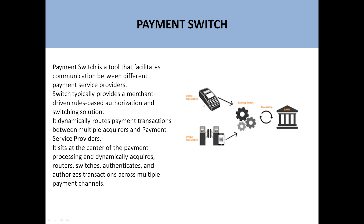If you look at this figure, there are so many channels. For example, we have a POS application, we have a mobile application, we have ATMs. So transactions can be performed from any channel — POS, ATM, mobile, internet banking — and these transactions will reach the banking switch, which after processing will provide them to the core banking system.